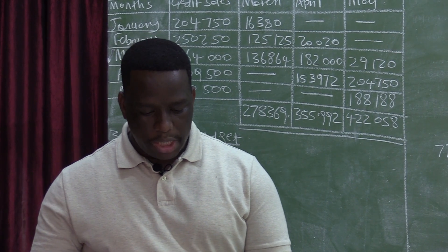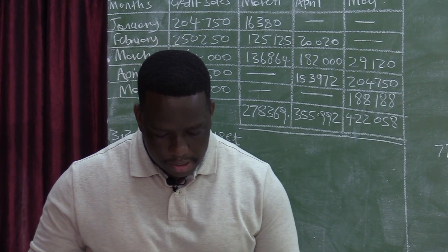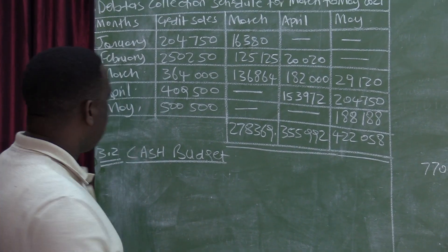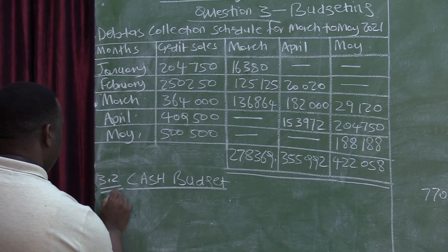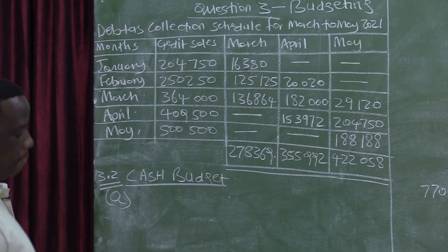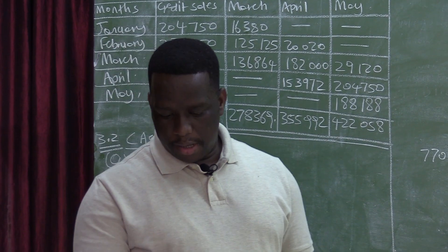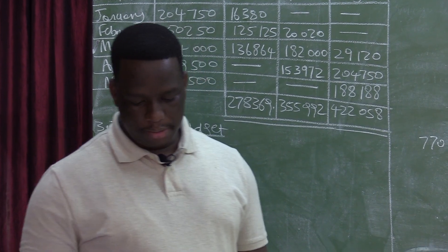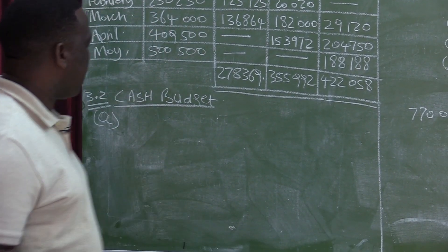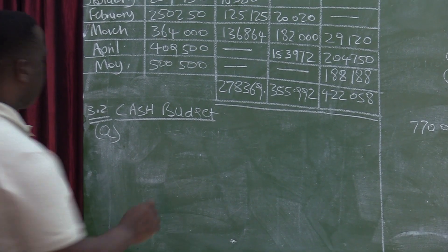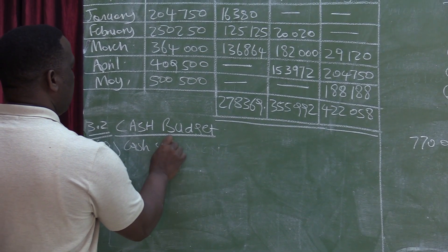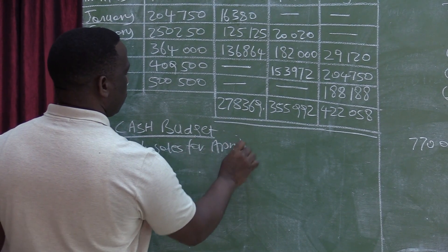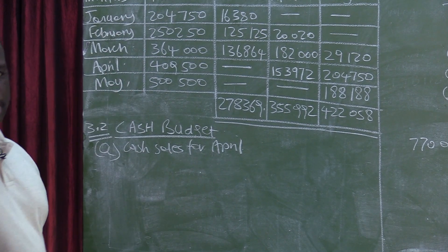The missing amount indicated by alphabet A is for April. A is cash sales for April. So we are required to calculate cash sales for April.